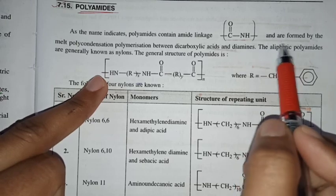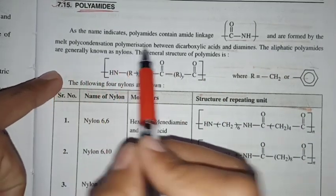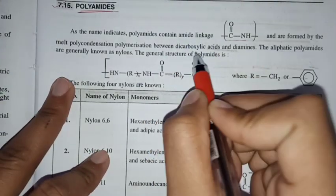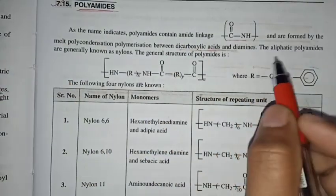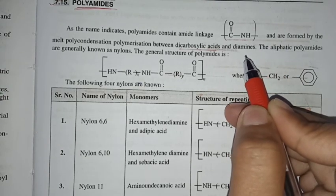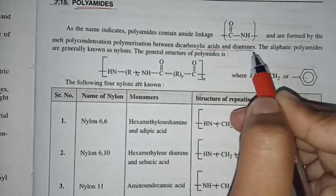And are formed by the melt polymerization between dicarboxylic acid and diamine. So this is what we call polyamides. Dicarboxylic acid, we call two COOH and two amine groups.